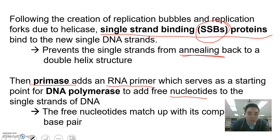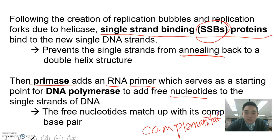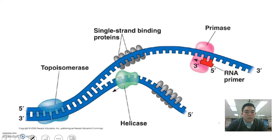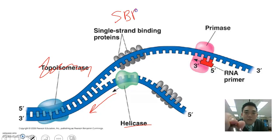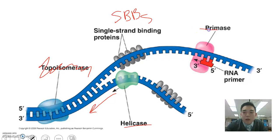The free nucleotides are going to match up with their complementary base pairs. Here we have helicase coming in to unwind and unzip our double helix structure. We have our SSBs coming in to bind to the now single strand of DNA in order to prevent it from annealing back. We have primase coming in to add the short sequence of RNA, which then allows for DNA polymerase to come in and begin replication.